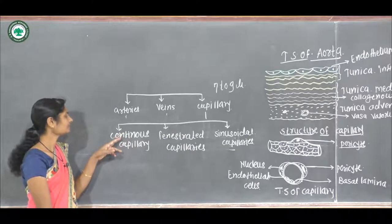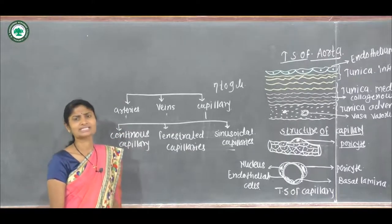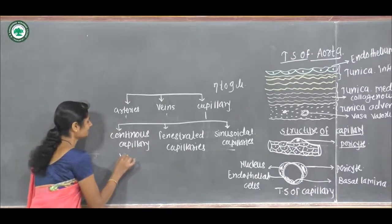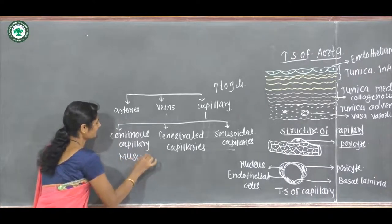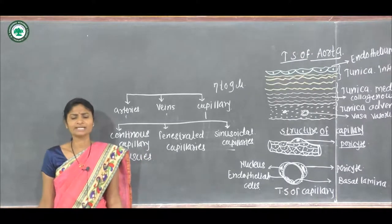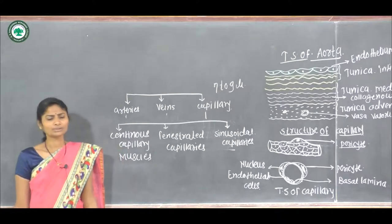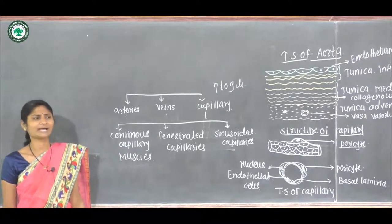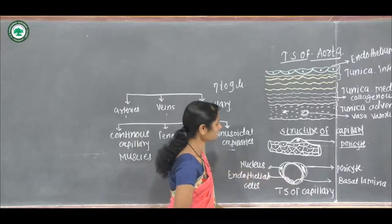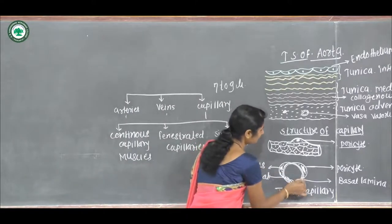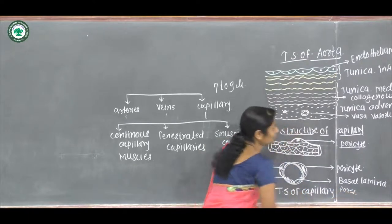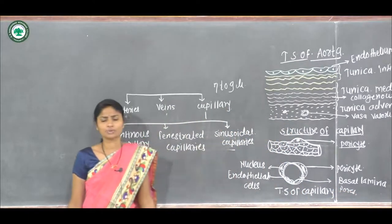The first type is continuous capillaries. These are found in the muscles, and their endothelium and basal lamina are continuous. Pores are present in the endothelium of these continuous capillaries.